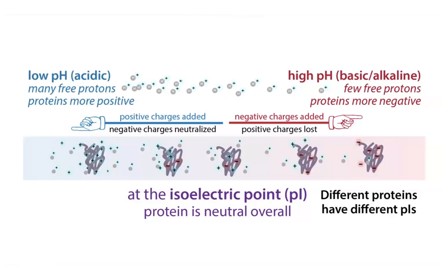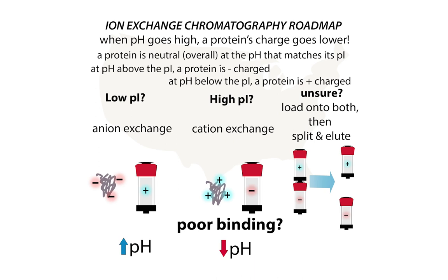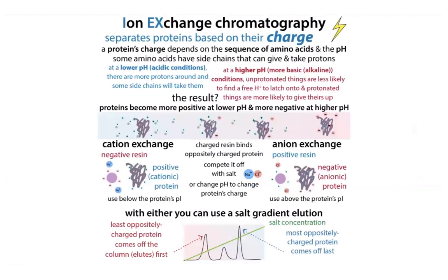Also, the resin doesn't see the whole protein as a single charge — it sees patches of charge on the protein surface and binds to those patches. So even if your protein is basic it might not bind well to the cation exchange resin, and might even bind to the anion exchange resin. Proteins can be weird. Bottom line: positively charged (cationic) protein — use cation exchange, and be below the pI. Acidic protein with a low pI — be above the pI and use anion exchange chromatography. In either case, you're exchanging the protein bound to the resin for salt ions. That is the basis of ion exchange chromatography.